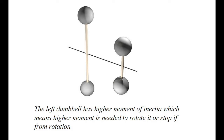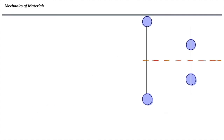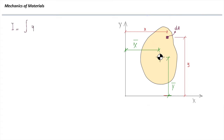Now let's replace mass with a two-dimensional cross-sectional area and determine the moment of inertia for two-dimensional sections. Moment of inertia, shown as I, is mathematically defined as the integral of distance squared multiplied by dA. That gives the moment of inertia about the horizontal axis, Ix. Similarly, the moment of inertia about the y-axis would be the integral of x squared dA.